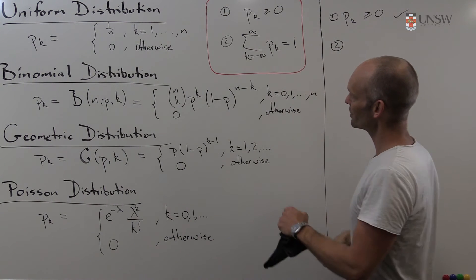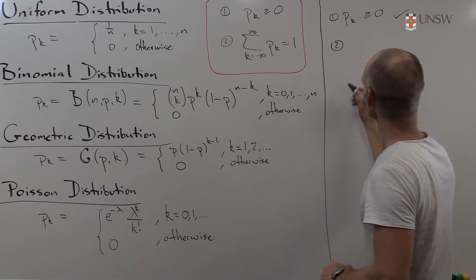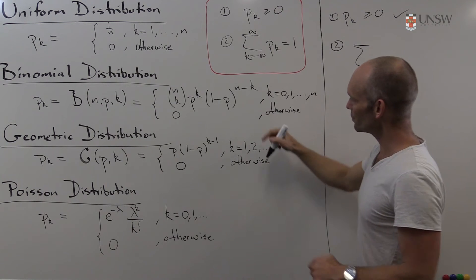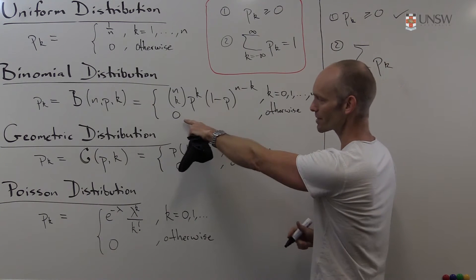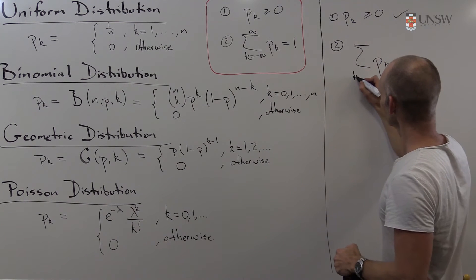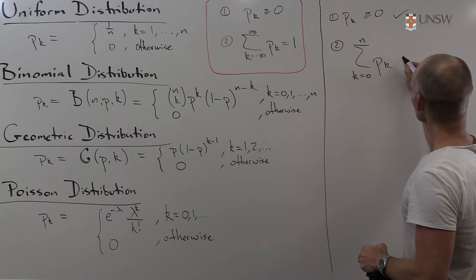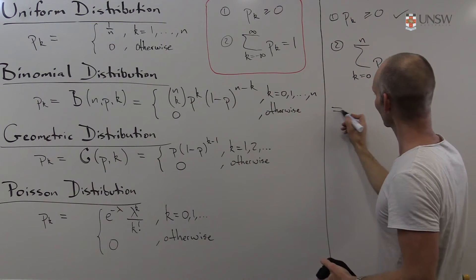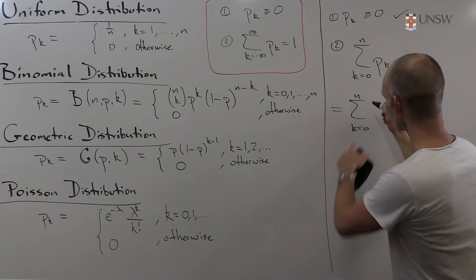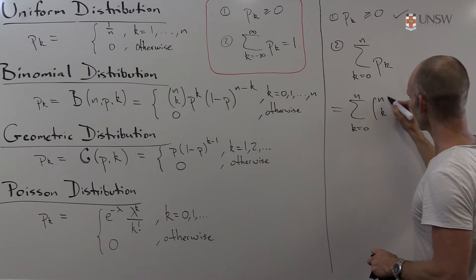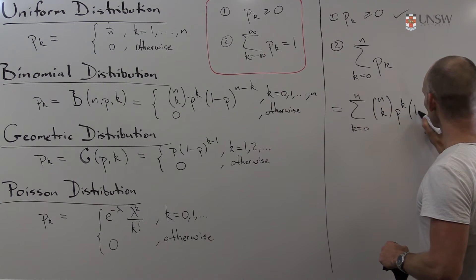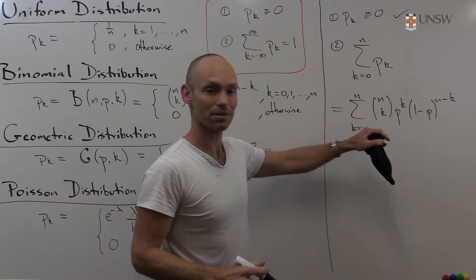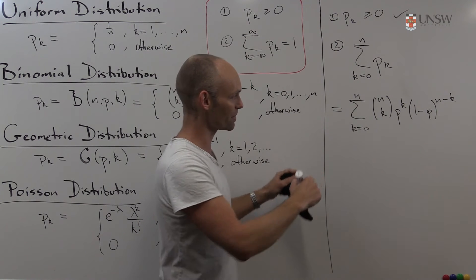For the second part, we have to add up all the terms. We're summing over p(k) over all terms. Focusing on terms that are actually positive, those are for k going from 0 up to n. This gives us the sum from k equals 0 to n of the binomial coefficient n choose k, times p to the power of k, times 1 minus p to the power of n minus k. It's a mouthful, but if you look at it, you recognise that's actually just the binomial expression from the binomial theorem.